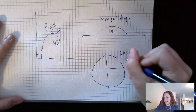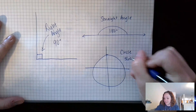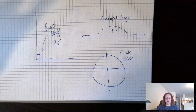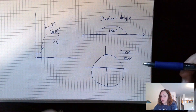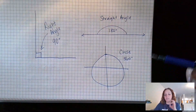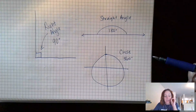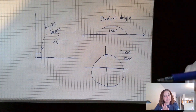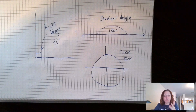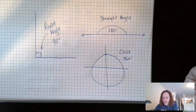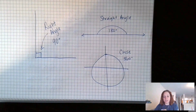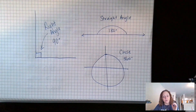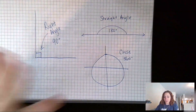We know that a full circle is exactly 360 degrees. So: a right angle is 90 degrees, a straight angle is 180 degrees, and a circle is 360 degrees. You have to know those numbers — if you don't, make some note cards to review and memorize them.